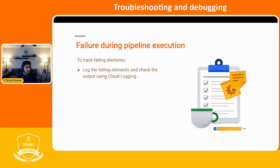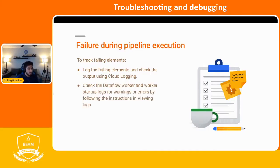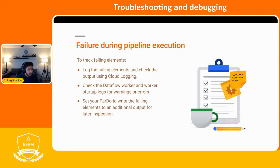We can track this by using the logging libraries for Java or Python, and it'll show up in Stackdriver. This will allow us to see the specific elements that cause exceptions. We can also check the worker logs or worker startup logs for any errors, and we can set our ParDo to write the failing elements to an additional output — so dead letter topics or dead letter tables in BigQuery — which will allow us to inspect them later on.